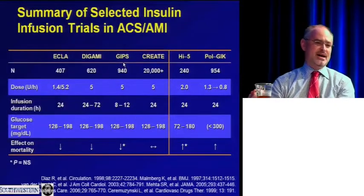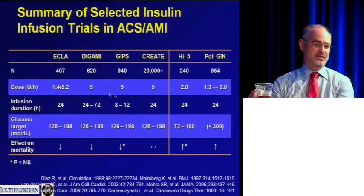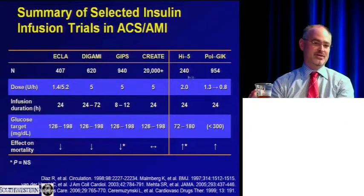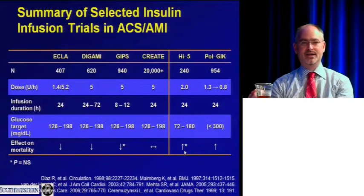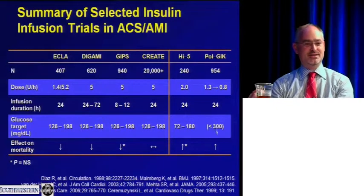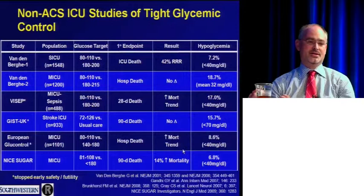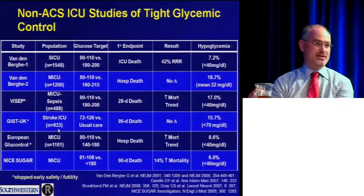All these GIK studies used five units per hour of insulin. The only two trials that used more physiologic dosing were small trials, both with a signal of increased mortality — one stopped early for mortality, the other with a non-significant increase. So the only two times we've tested targeted glucose control in cardiology, we've failed and seen a suggestion of harm.